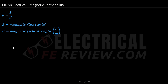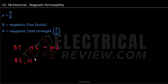The relationship between these three is that when magnetic flux B is high and magnetic field strength H is low, then we know that our magnetic permeability is low. On the other hand, if our magnetic flux is low and our magnetic field strength H is high, then we know that our magnetic permeability is high as well.